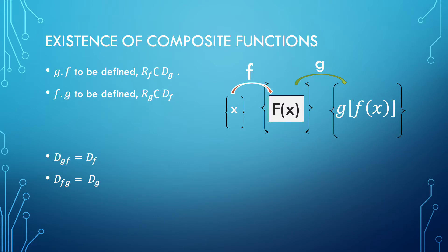How to determine the existence of Composite Functions? For the Composite Function g∘f to be defined, the range of function f must be a subset of the domain of function g — in other words, the image of function f must be a subset of the objects of function g.